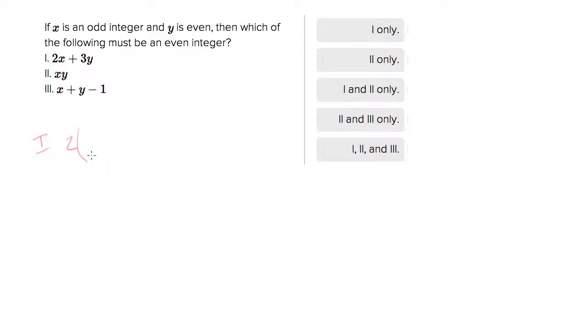You can think of option one as 2 times an odd plus 3 times an even. An even times anything is even, so this becomes even plus even, and even plus even is always even. If you're not sure, that's because I've memorized that. Look up your even-odd theory and memorize it if you don't have it already.